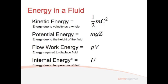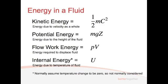The last type of energy is internal energy, denoted as U — energy related to the temperature of the fluid. However, we're not going to be using that right now; we normally assume the temperature change to be zero, so delta U is generally zero and we strike it out. So the three types of energy we're dealing with are: kinetic energy — one-half mc squared; potential energy — mgz; and flow work energy — pressure times volume.